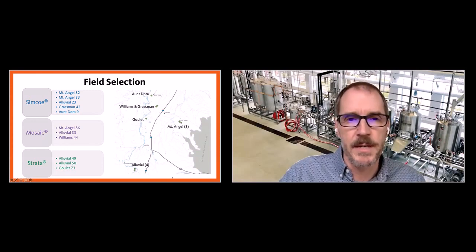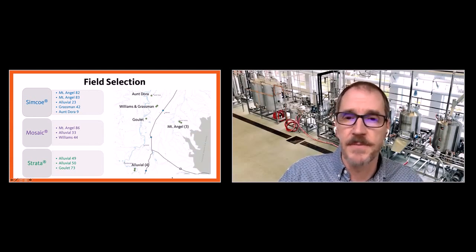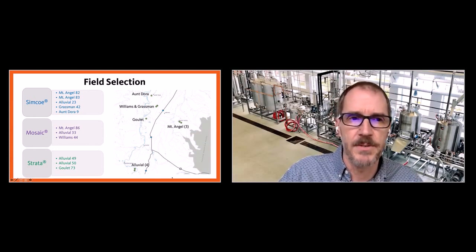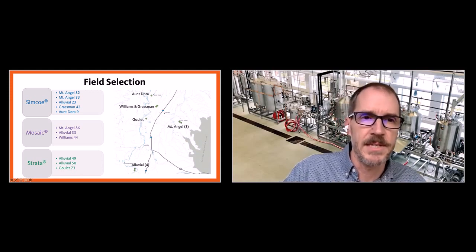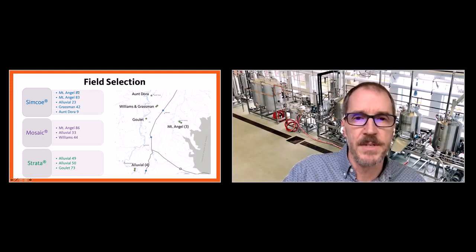Working with Coleman Agriculture is great because they've got farms that span all reaches of the Willamette Valley. In this study, we looked at five different locations, 10 different fields, and within those, three different hop varieties. The designation shown here represents the varieties, the location, and the field number.